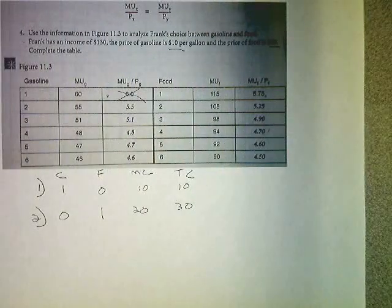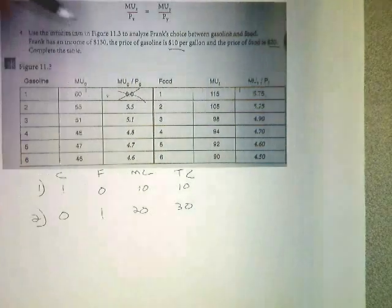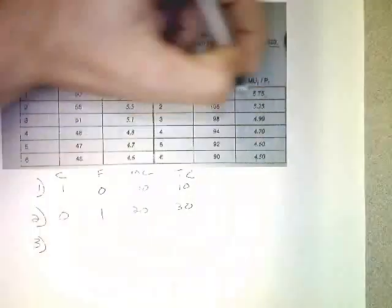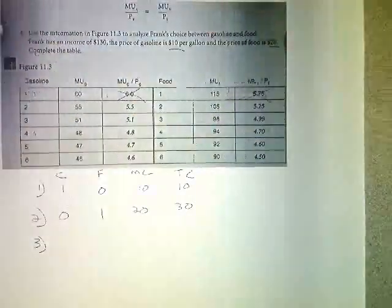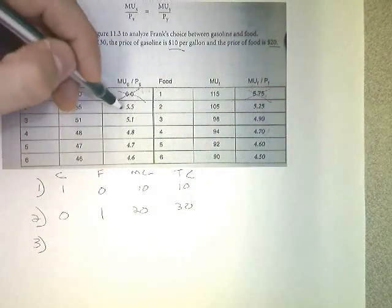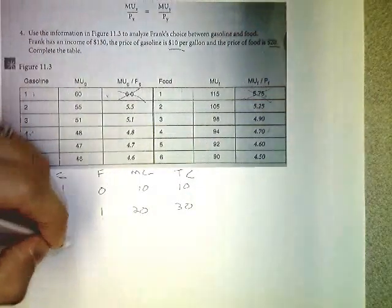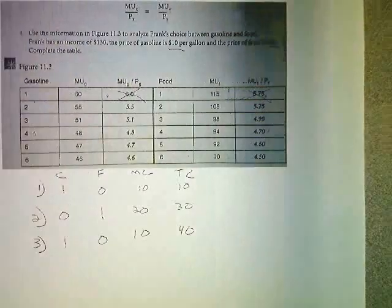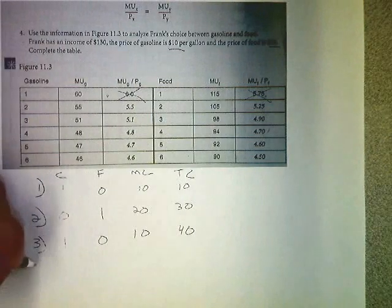So in this case, he has $130, so he's still got money to spend, and we'll keep going. Decision number three, let's mark that off, is between the second gas or the second food. Gas is higher, so again, one gas, no food, $10 marginal cost. Now we're up to a $40 total cost. He's still got some money left.